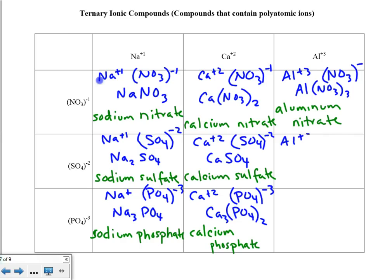Next: Al⁺³ and SO₄⁻². Crisscrossing, I get Al₂(SO₄)₃. The name of this substance is aluminum sulfate.